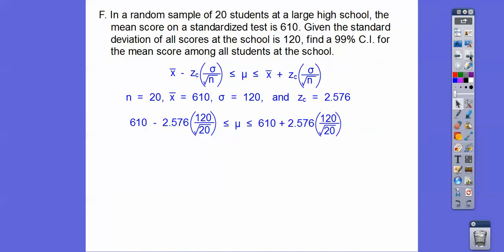What I would do on this—I did this in class today—120 divided by 20 square root, then you hit equals, and that'll give you the decimal of 120 divided by the square root of that. Then multiply it times 2.576, and that's the decimal we're going to add and subtract from the sample mean of 610. So we get about that.